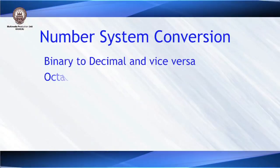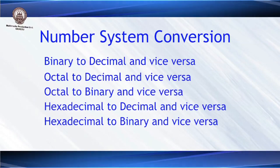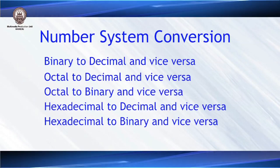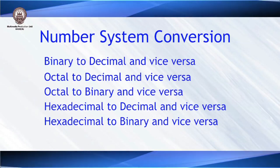So till now we have seen the four number systems mostly used in computers: decimal, binary, octal, and hexadecimal. Next, let us look at certain conversions between these number systems — binary to decimal, decimal to binary, binary to octal, and all these types of conversions.